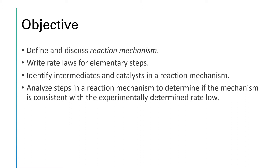Our objectives include to define and discuss reaction mechanisms — a mechanism is the step-by-step process — to write rate laws for elementary steps. We'll see what an elementary step is on the next slide. And we're going to want to identify intermediates and catalysts. Catalysts will be in the next video, but we'll work with intermediates in this one. And then we want to see if a proposed mechanism is consistent with what experiment tells us is the rate law for a particular reaction.